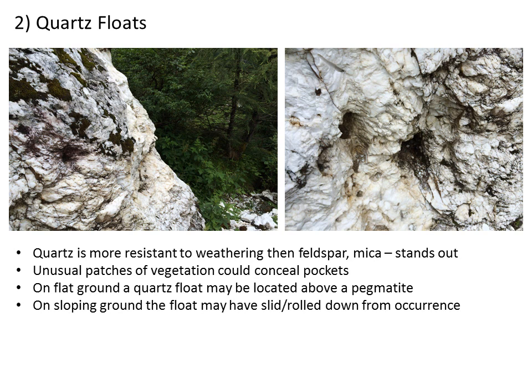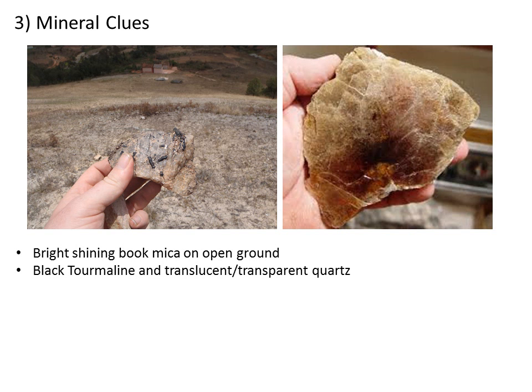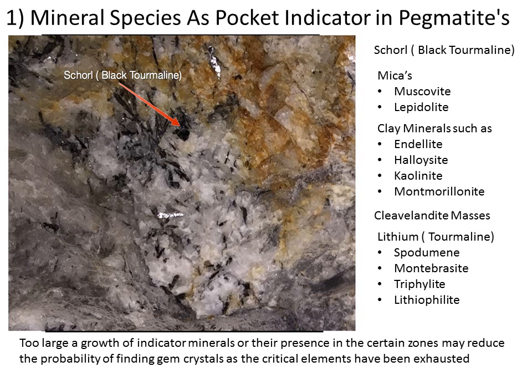If the quartz is on flat ground, the pegmatite may be directly below. On a slope it may have rolled, but it's still worth investigating. Other key indicators: black tourmaline is a very good clue — if you find a rock with quartz and black tourmaline crystals, something is going on nearby. In Madagascar, large flakes of book mica lying in the grass are also strong clues — they had to come from somewhere. These are all strong indicators to follow when other clues like vegetation obscure the landscape.